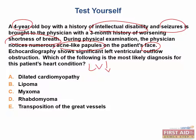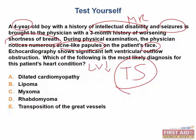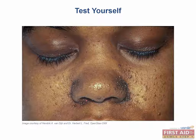This vignette is giving you key descriptors including intellectual disability, seizures, shortness of breath, acne papules on the face, and decrease in left ventricular output due to obstruction. This is a classic presentation of tuberous sclerosis. Tubers in the brain cause seizures and intellectual disability. The acne on the face is actually what we call angiofibromas — we can see that in this image. This has previously been called adenoma sebaceum, but you have to describe this as angiofibromas on the face.